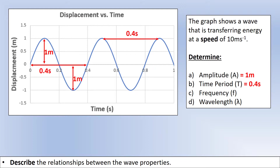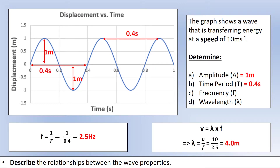Now for the calculated values. We can calculate frequency once we know the time period: one divided by 0.4 gives a frequency of 2.5 Hertz. To find the wavelength, we use the wave equation and rearrange to make wavelength the subject by dividing both sides by frequency. With speed of 10 meters per second and frequency of 2.5 Hertz, we get a wavelength of 4 meters.